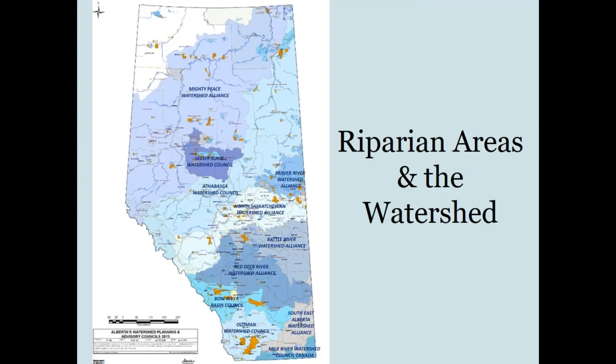Riparian areas don't exist in isolation — they are connected to the larger watershed. In Alberta, we have seven major river basins or watersheds: starting in the north, the Hay, the Peace Slave, Athabasca, Beaver, North Saskatchewan, South Saskatchewan, and along the south border, the Milk River.